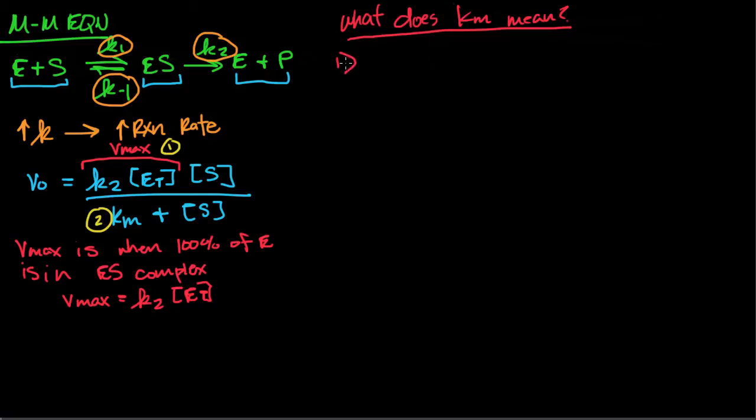So first thing to remember is that S equals Km when your velocity equals half of the maximum velocity. And what I remember is if you have a higher Km, it's tougher to reach Vmax, and that's not what you want out of an enzyme. It's going to be not very good for an enzyme.